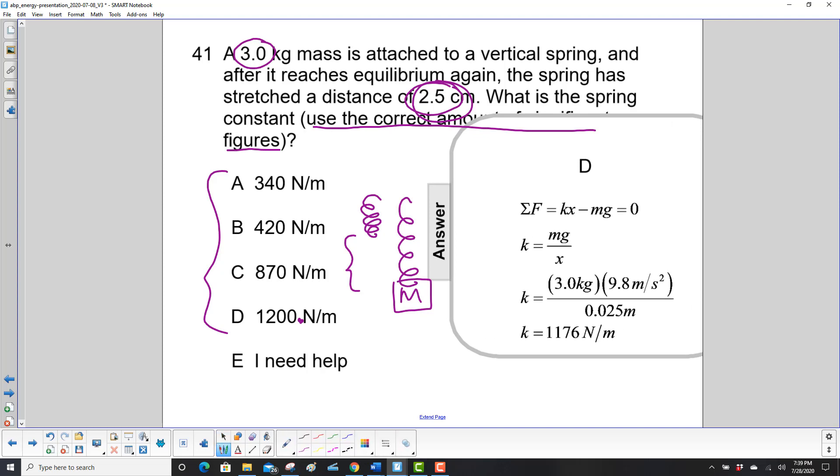Let's look at the free body diagram. What forces are acting on this mass? Gravity, mg, down, so we give it a negative sign. Then the spring force is pulling it up, so kx is in the up direction, so it's positive. It's not moving, so the sum of the forces equals ma. a equals zero.